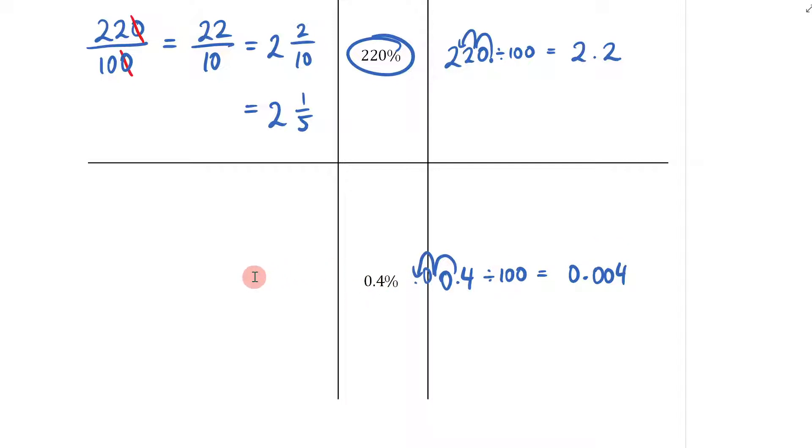If I turn it into a fraction, I do exactly the same thing I've been doing. I take 0.4 and put it over 100. Now this is where it gets a little different. I don't like having a decimal in my numerator, so I'm going to multiply the top by 10 and the bottom by 10.